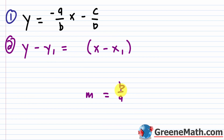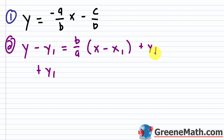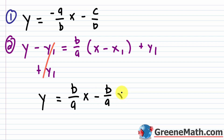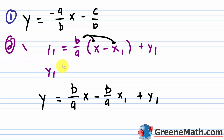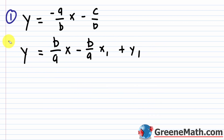Let's call this equation 2, using point-slope form: y minus y sub 1 equals m times the quantity x minus x sub 1. Here, x sub 1 and y sub 1 are the given point, and the slope m is b over a. Solving for y by adding y sub 1 to both sides gives y equals b over a times x, minus b over a times x sub 1, plus y sub 1.